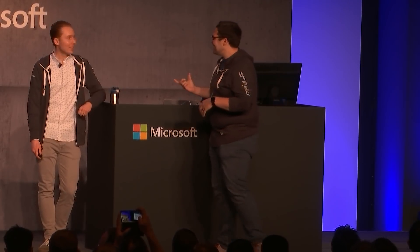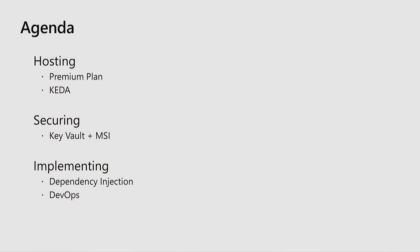This will be a very high-energy session. For the agenda today, we've got a lot of exciting things to talk about. We've split this up into three sections — three different pivots when you're building a serverless application. We're going to start with talking about hosting options, including some new features we've announced like the premium plan and KEDA. We're going to talk about securing your functions using Key Vault to pull in secrets and managed identities.